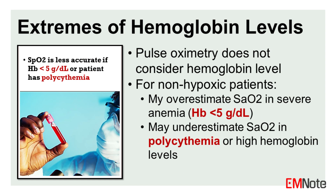Furthermore, pulse oximetry does not consider hemoglobin level and has limitations in accurately measuring oxygen saturation at extremes of hemoglobin concentration. For non-hypoxic cases of severe anemia with hemoglobin levels below 5 grams per deciliter, pulse oximeters may overestimate the oxygen saturation.